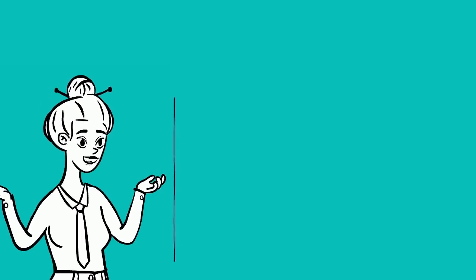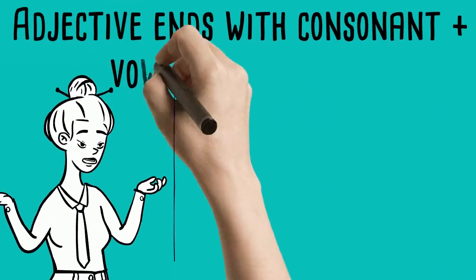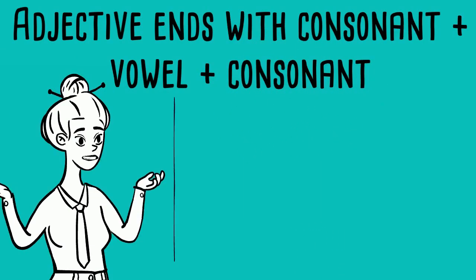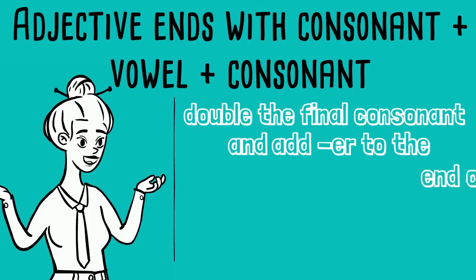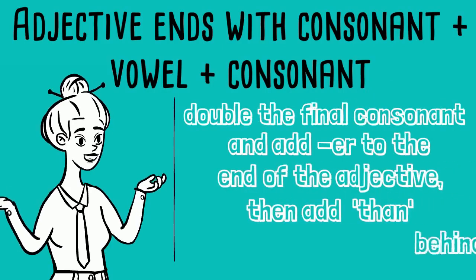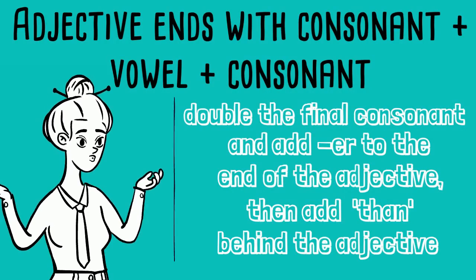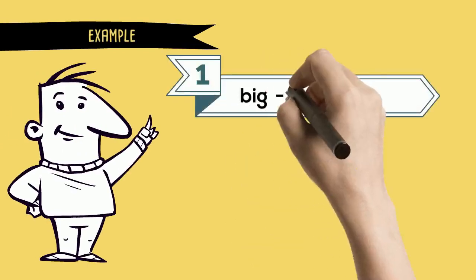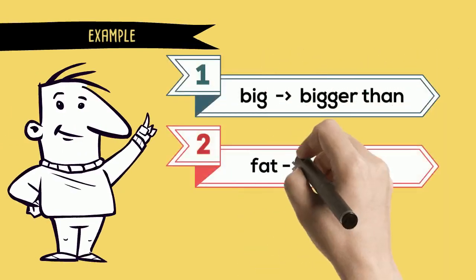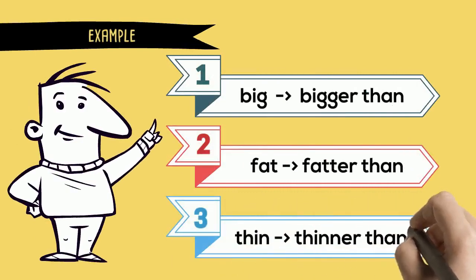Rule number four: for adjectives ending with consonant-vowel-consonant, or CVC, we double the final consonant and add 'er' to the end of the adjective, then add 'than' behind the adjective. For example: big → bigger than, fat → fatter than, thin → thinner than.